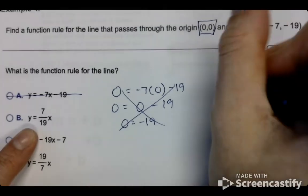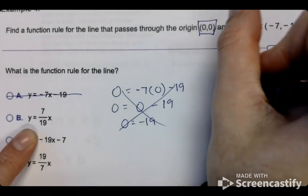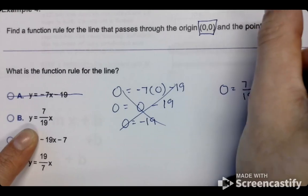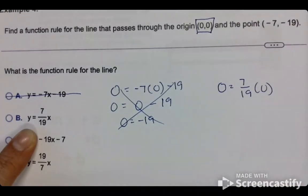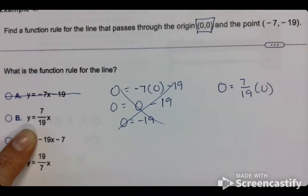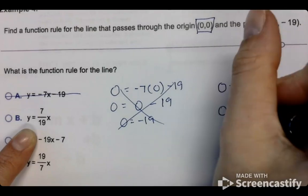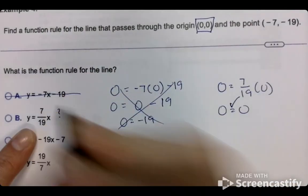Alright, so I'm going to do the same thing for this one. In place of Y, I'm going to put 0. In place of X, I'm going to put 0 as well. So then from there, we are going to... Does 0 equal 0? It does. So this is a maybe.